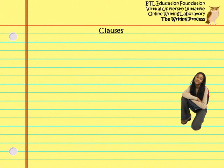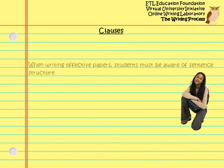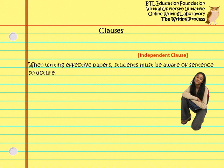A sentence is made up of one or more clauses. A clause is a collection of words that contains a verb and a predicate, but is not necessarily a sentence. A clause that can stand alone is an independent clause. All sentences are independent clauses.